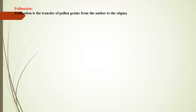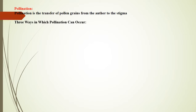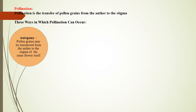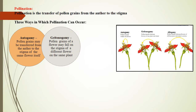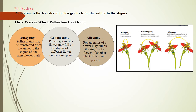Let's understand what pollination is. Pollination is the transfer of pollen grains from the anther to the stigma. There are three ways in which pollination can occur. Autogamy: pollen grains may be transferred from the anther to the stigma of the same flower itself. Geitonogamy: pollen grains of a flower may fall on the stigma of a different flower on the same plant. Allogamy: pollen grains of a flower may fall on the stigma of a flower of another plant of the same species.